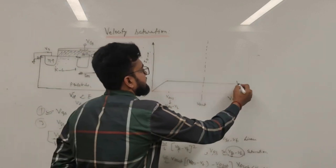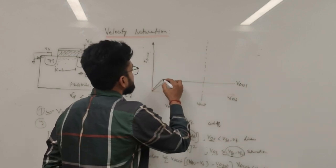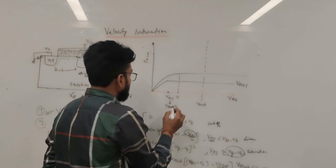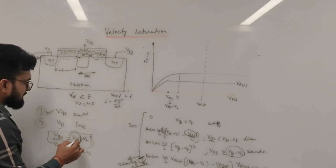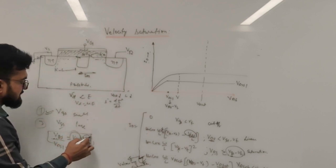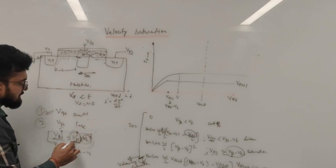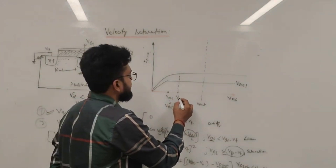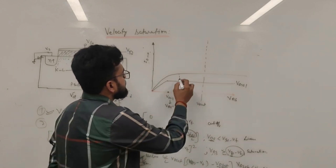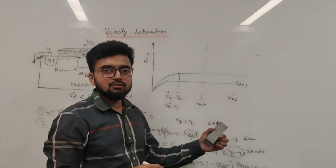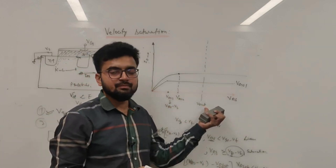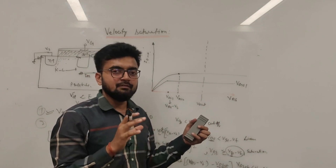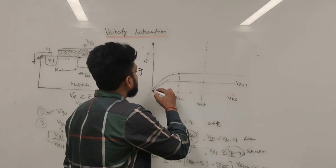As we increase VGS, the edge of saturation shifts to the right since VDS is directly proportional to VGS minus VT. So higher VGS means higher VDS at saturation. Even for VGS2 giving VDS2, the edge of saturation is still before the VDSat point — there is some drift velocity but not the maximum, so velocity saturation is not yet dominant.